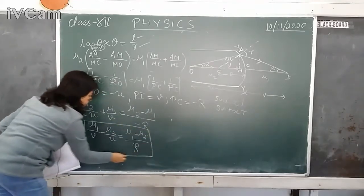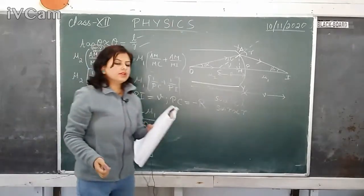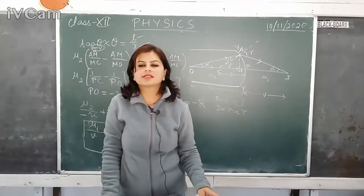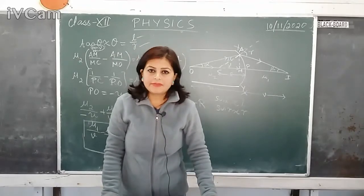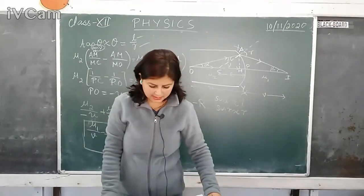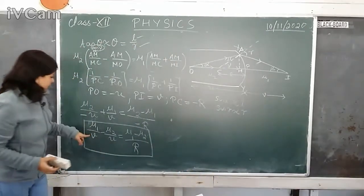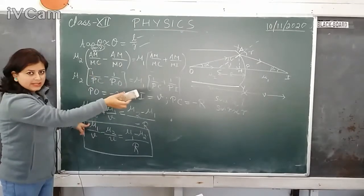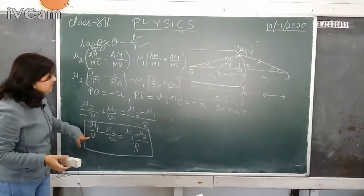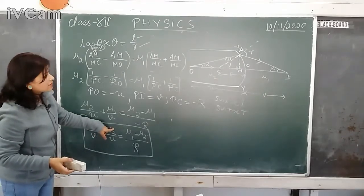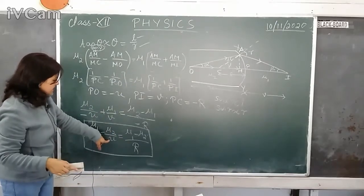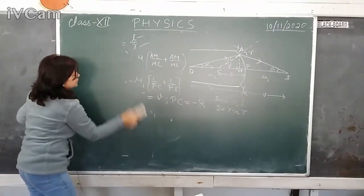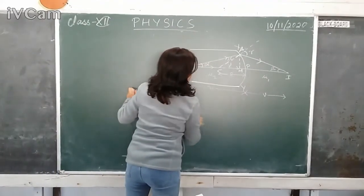Applying these values gives mu2 by (minus U) plus mu1 by V equals (mu2 minus mu1) divided by (minus R). Finally rearranging: mu1 by V minus mu2 by U equals (mu1 minus mu2) divided by R. This is the expression frequently asked in ISC — the relationship between the refractive indices of the two media, the object distance, and the image distance for a spherical refracting surface.